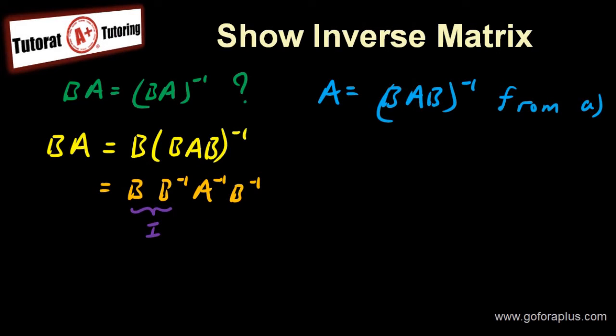Now this is I. So I don't have to write it, right? So it's just leaving to be A minus 1, B minus 1. So this is gone.